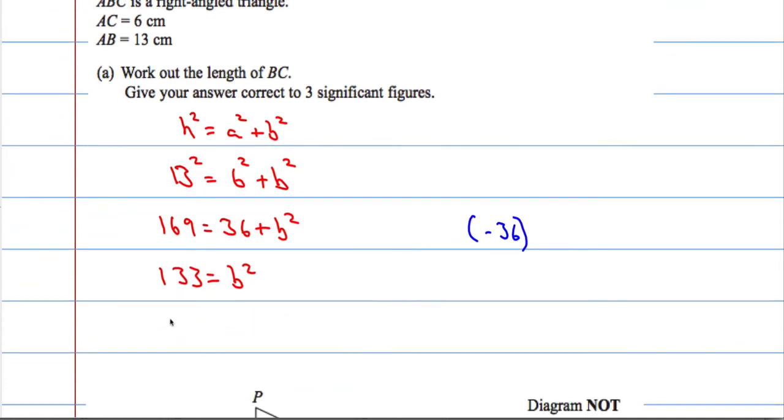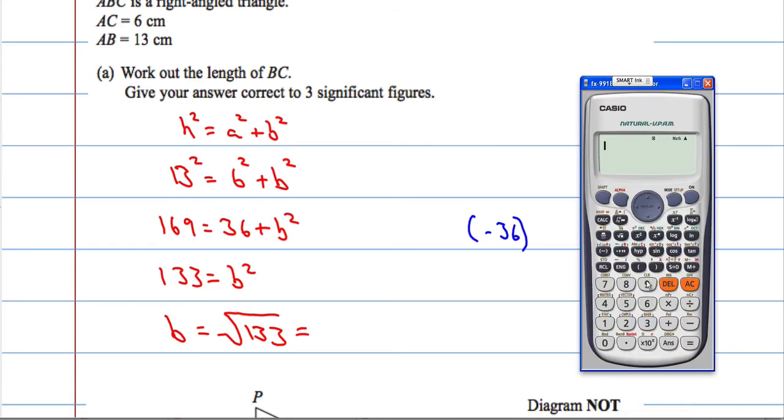To get B, we need to do the square root of 133. The square root of 133 gives us 11.53256259. To 3 significant figures is going to be 11.5.